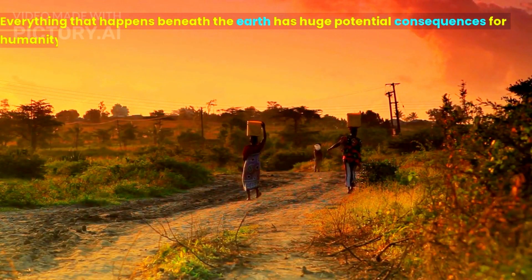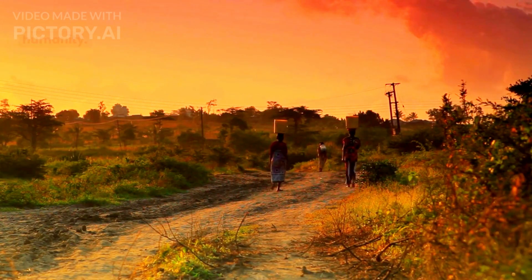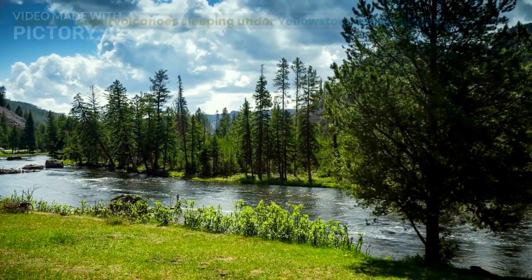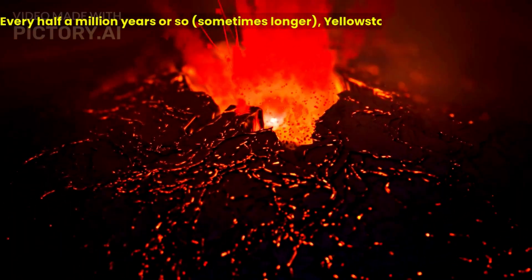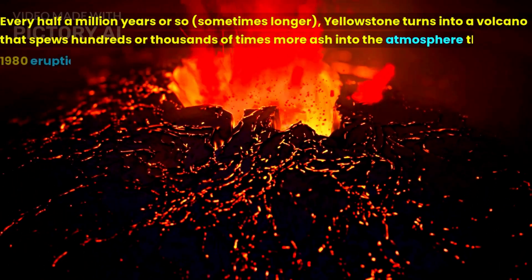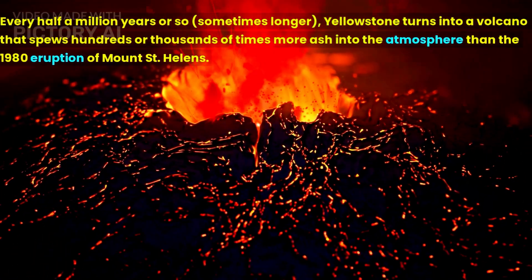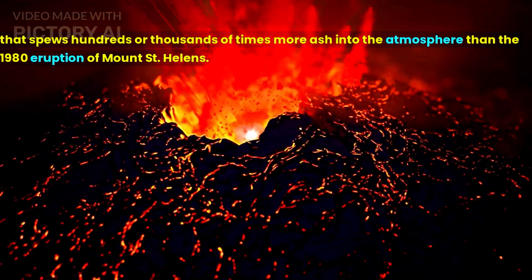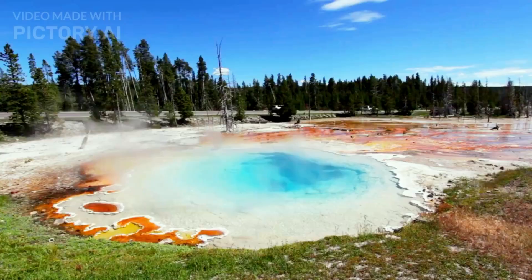Everything that happens beneath the Earth has huge potential consequences for humanity. Consider supervolcanoes sleeping under Yellowstone National Park. Every half a million years or so, sometimes longer, Yellowstone turns into a volcano that spews hundreds or thousands of times more ash into the atmosphere than the 1980 eruption of Mount St. Helens.